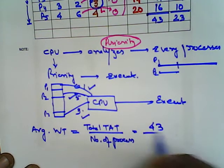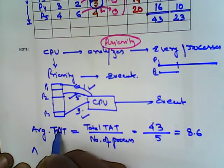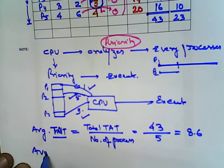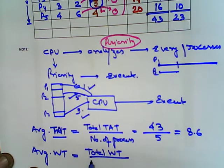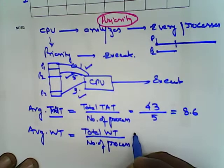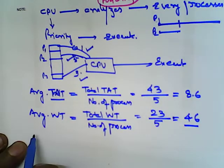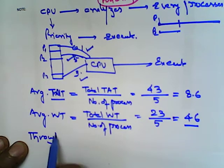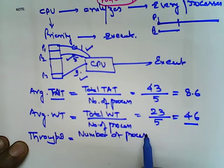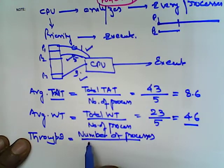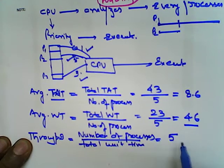Average turnaround time = total TAT / number of processes = 43 / 5 = 8.6. Average waiting time = total WT / number of processes = 23 / 5 = 4.6. Throughput = number of processes / total unit time = 5 / 20 = 0.25.